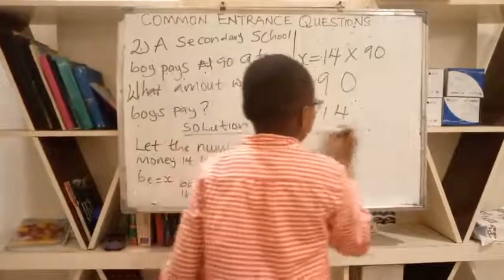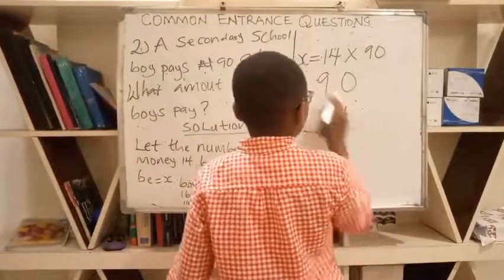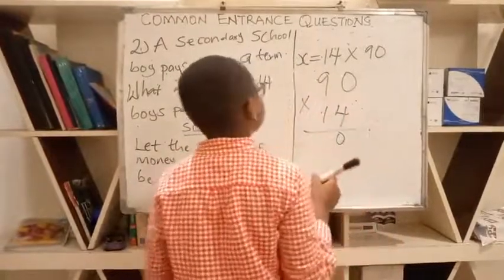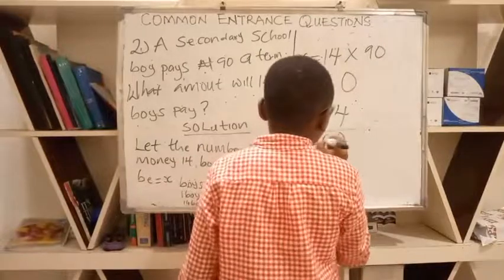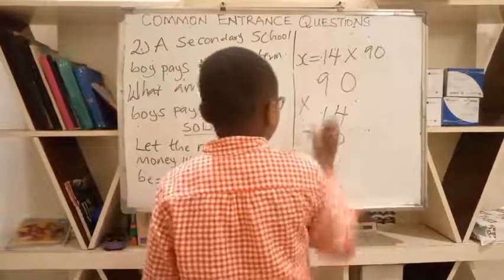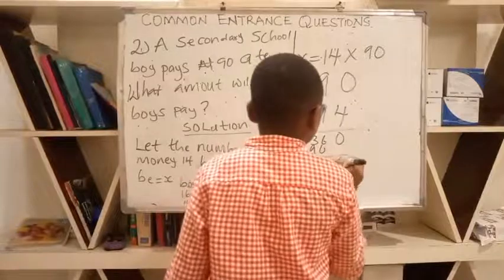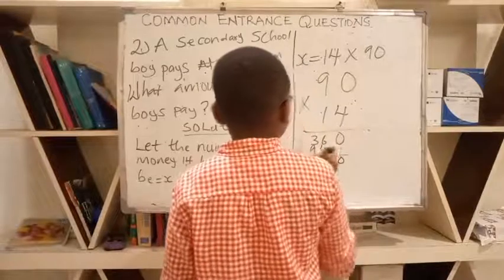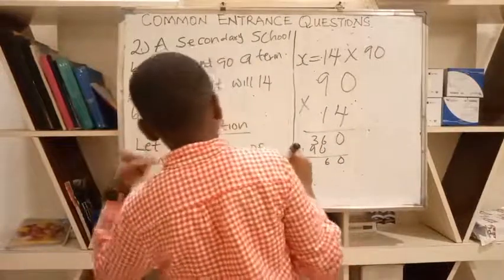Start. 4 times 0 is 0. 4 times 9 would be 36. 1, 0, 9, 0, 6. The numbers now will be 12.